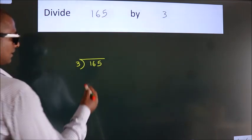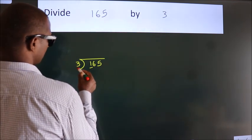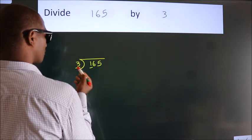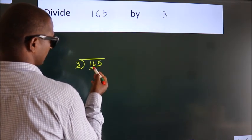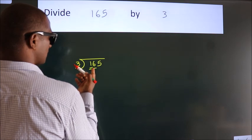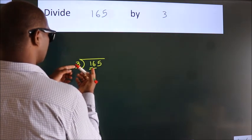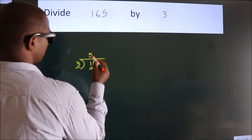Next, here we have 1, here 3. 1 is smaller than 3, so we should take 2 numbers: 16. A number close to 16 in the 3 table is 3 fives, which is 15.